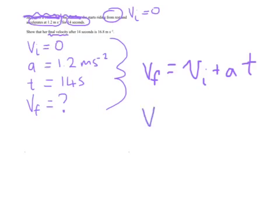VF is what we're looking for. Equals initial velocity, which is zero — that was the 'from rest' part. That's a tricky part; make sure you don't miss that one when reading questions. Zero plus A is 1.2, times by the time of 14 seconds.